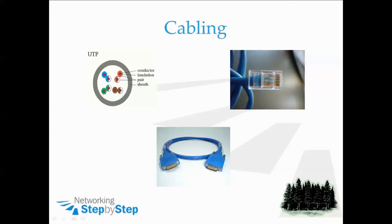To connect any device, you need an interface, a connector, and a cable. In the upper left-hand corner, we have a picture of an unshielded twisted pair, or UTP cable. The UTP cable is not one solid thick copper cable — it is actually made up of eight smaller copper cables, all held together by an outer sheath.